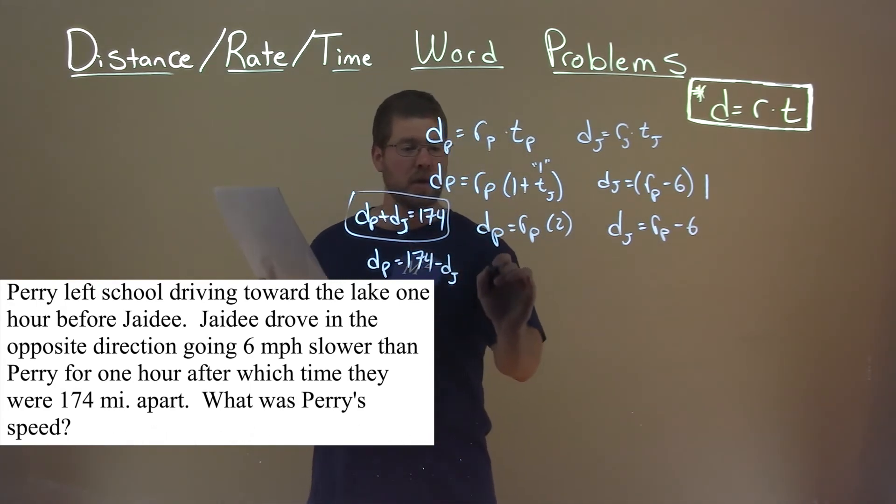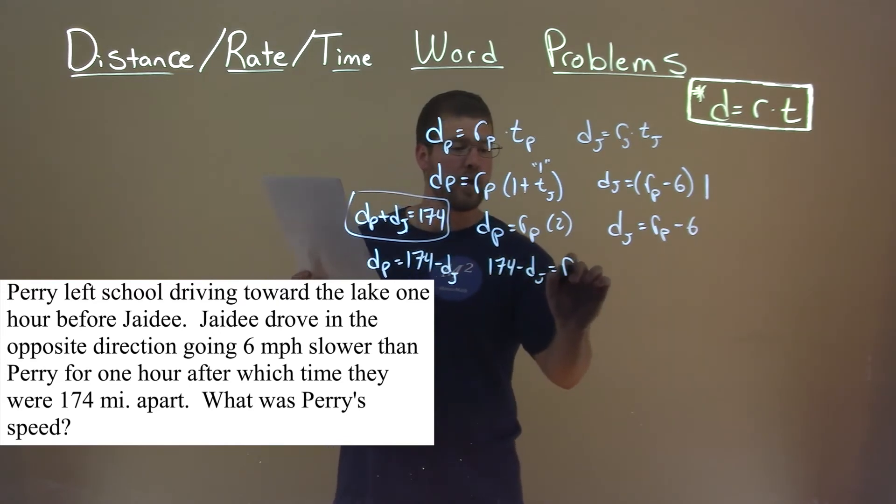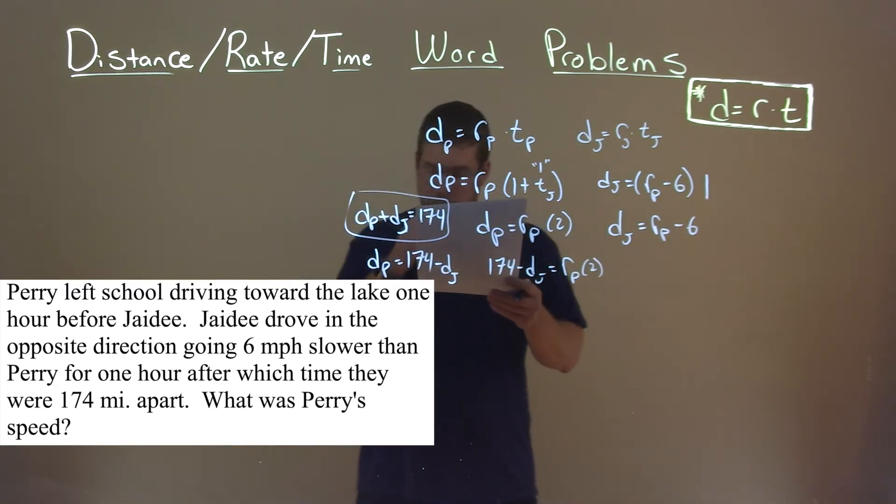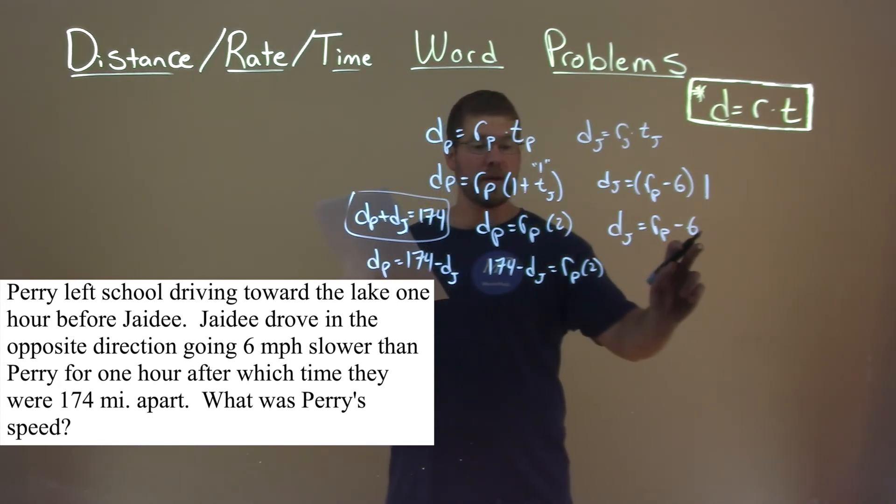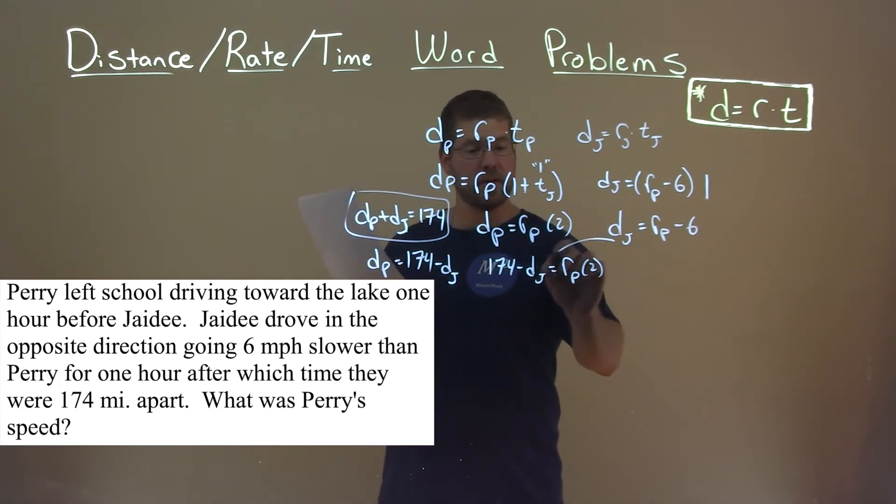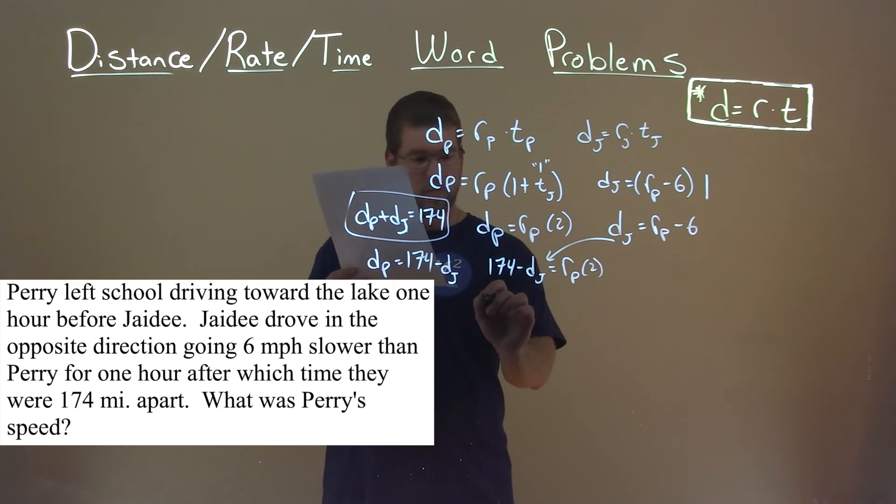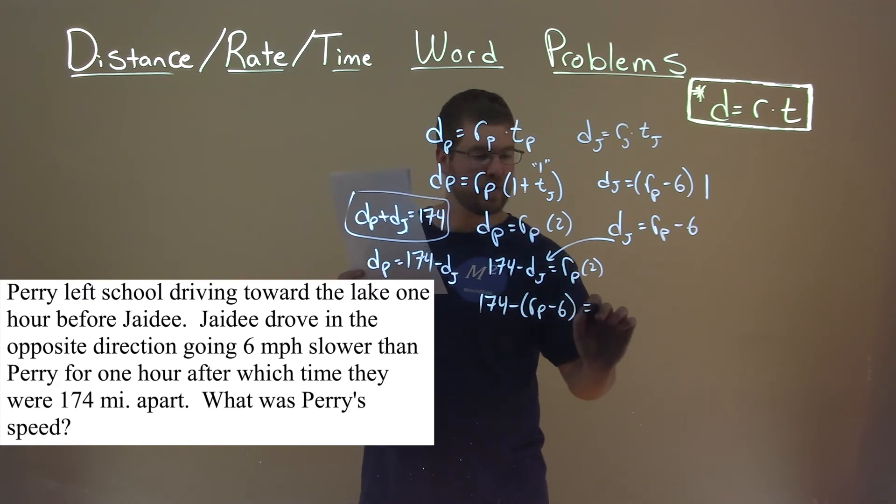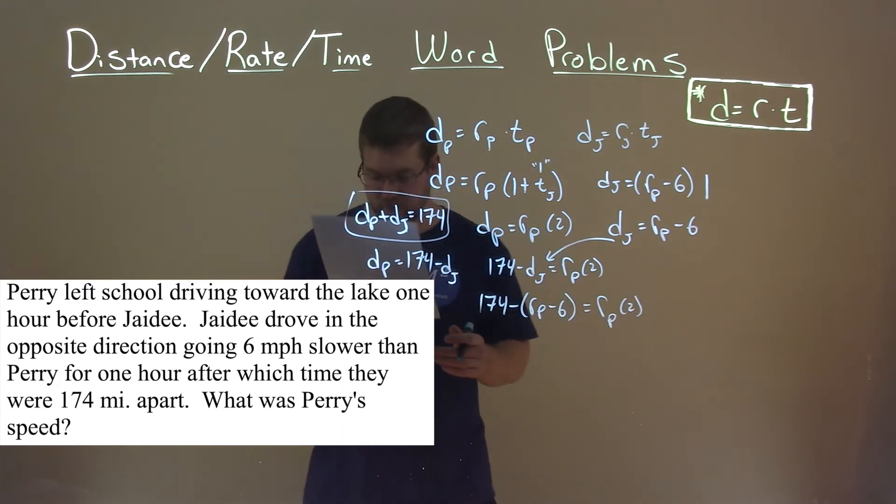So instead of D of P, we're going to write that 174 minus D of J is equal to R of P times 2. We also know D of J is equal to R of P minus 6. So let's replace that now here. So we have 174 minus R of P minus 6 is equal to R of P times 2.